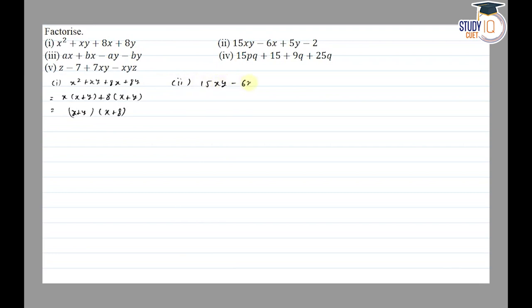Then second, 15xy minus 6x plus 5y minus 2. So in two terms we have 3x common, we have 5y minus 2. Then one common, so 5y minus 2, so 5y minus 2.